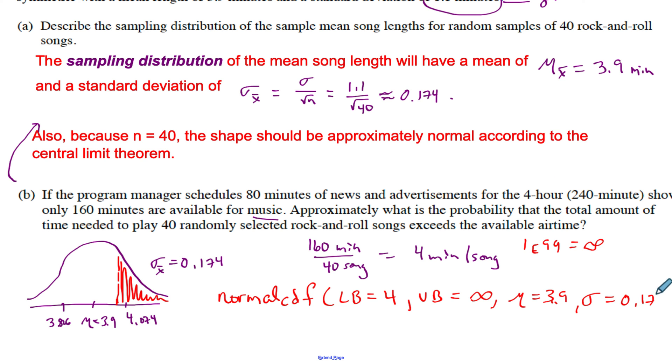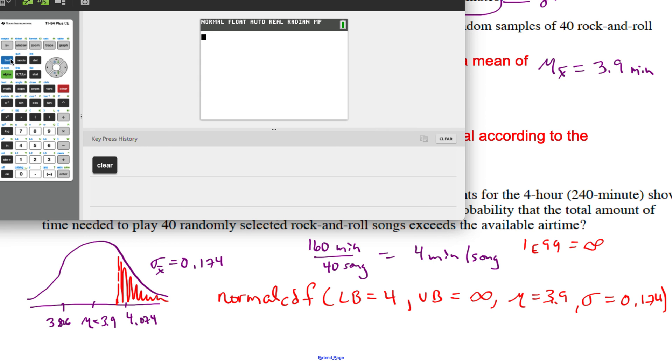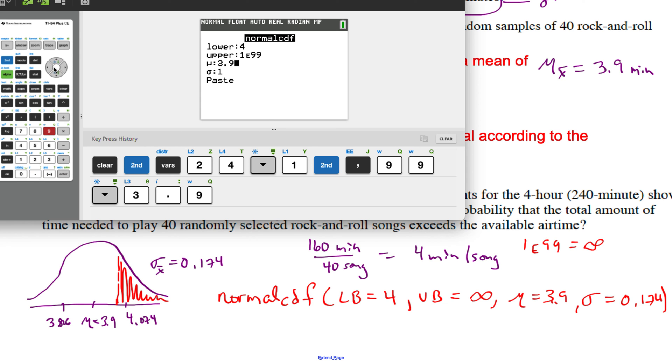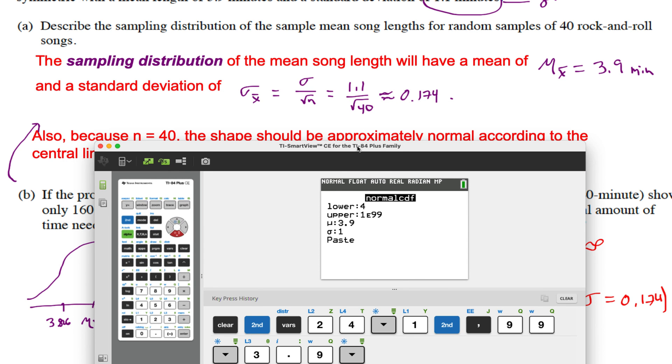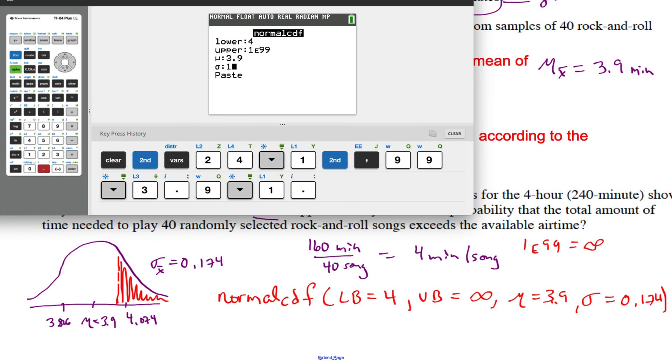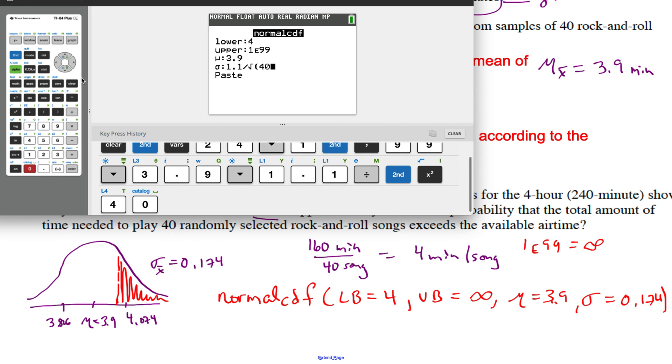So let's put that on the calculator. We go into distributions, choice 2. We want the probability that it's 4 or greater, so remember infinity as we go to the right. I use 1E99. We have μ of 3.9, and then I love being super precise, so remember our standard deviation is 1.1 divided by the square root of 40. So that's what I'm going to put in my calculator: 1.1 divided by the square root of 40. I'm just extra like that. I put it all in and I get 0.282659.